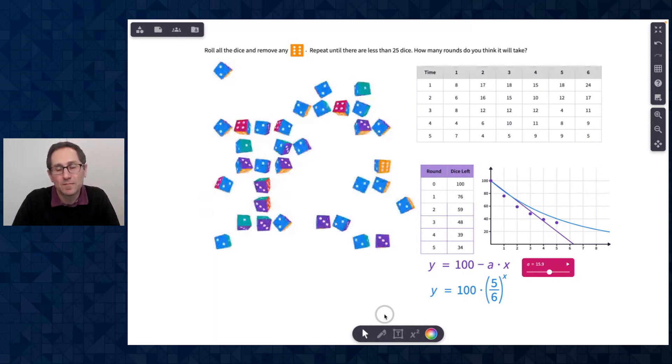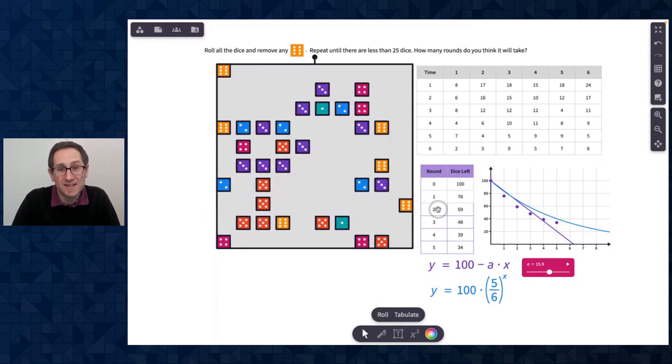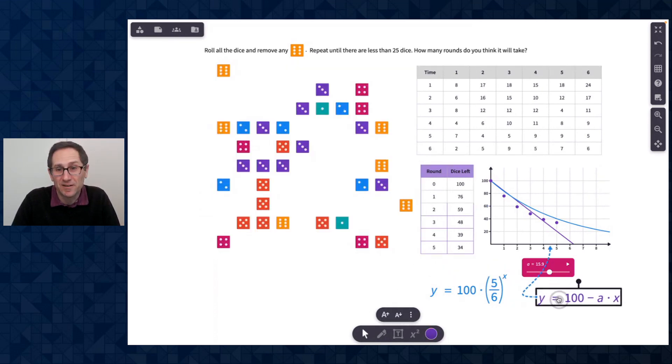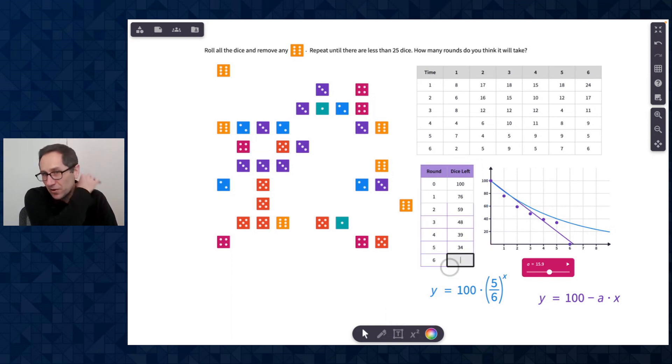Here we go. Roll. And oh, we got six this time. So now I really need to move these out of the way. I like how easy it is just to move things around the canvas as I'm adding more and more rows to my table. So 6, 34 minus six is 28. So there's another data point, right? Let's get rid of these.